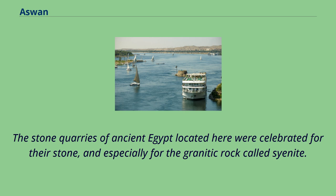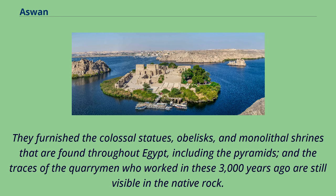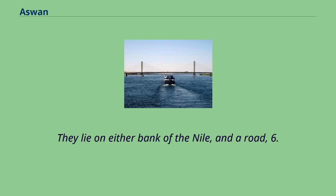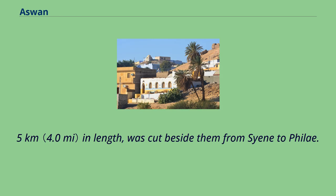The stone quarries of ancient Egypt located here were celebrated for their stone, and especially for the granitic rock called Syenite. They furnished the colossal statues, obelisks, and monolithical shrines found throughout Egypt, including the pyramids, and the traces of quarrymen who worked here 3,000 years ago are still visible in the native rock. They lie on either bank of the Nile, and a road 6.5 km in length was cut beside them from Syene to Philae.